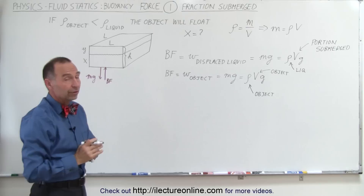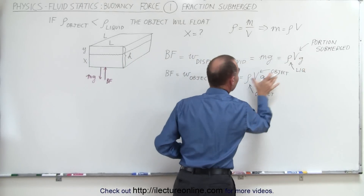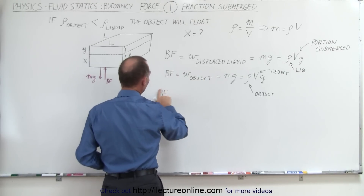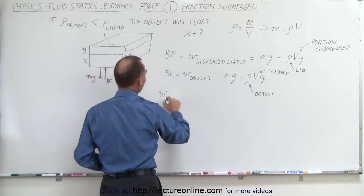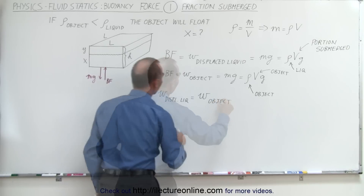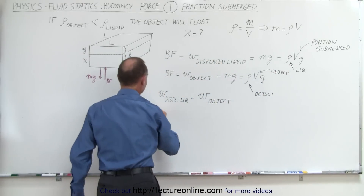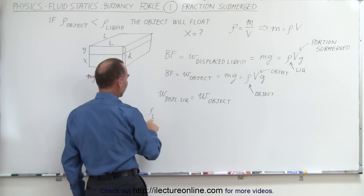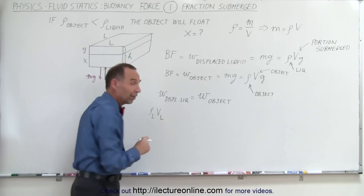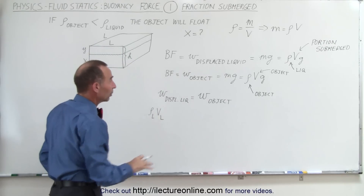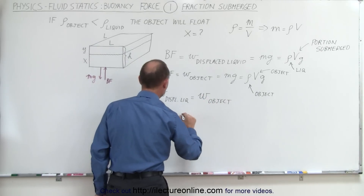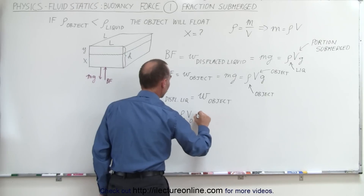Now we can set those two equal to one another, being careful to use the right subscripts to keep them separate. The weight of the displaced liquid equals the weight of the object: density sub l times volume sub l times g equals the density of the object times the volume of the object times g. Volume sub l is the volume of the displaced liquid — the portion of the object that's submerged — and that's how we keep the two separate.